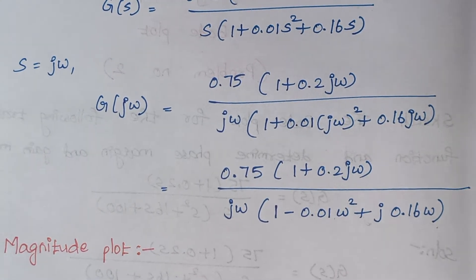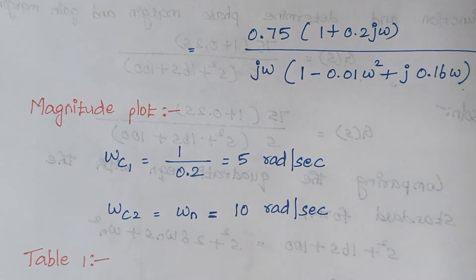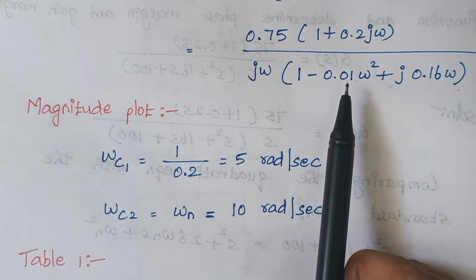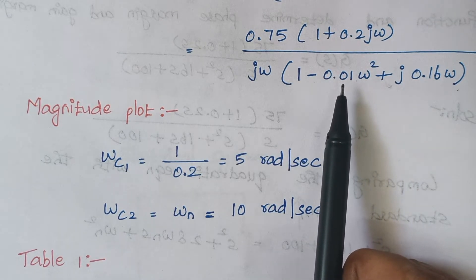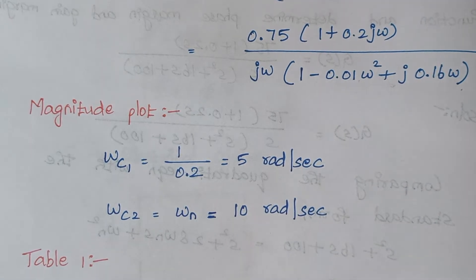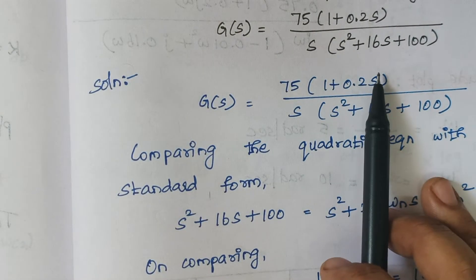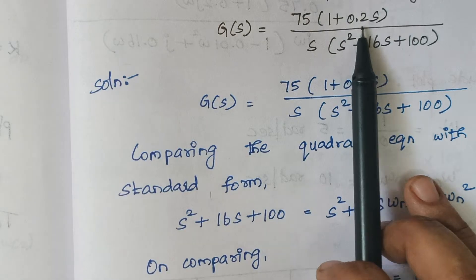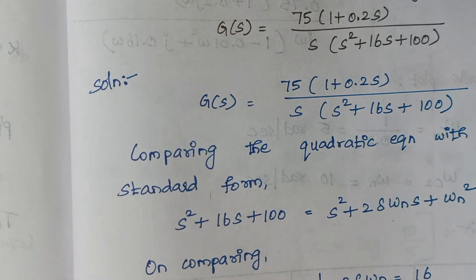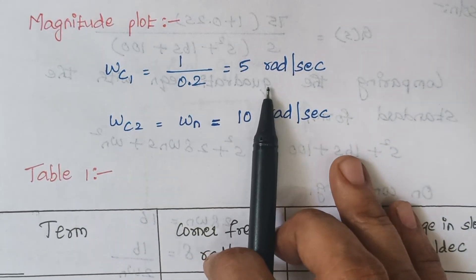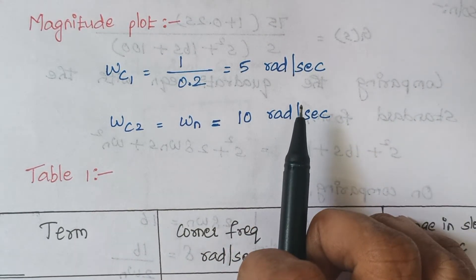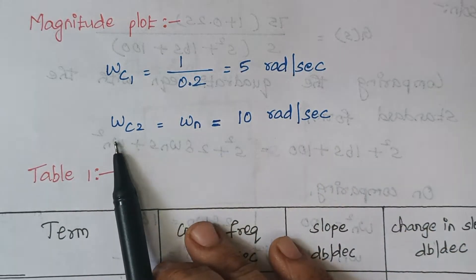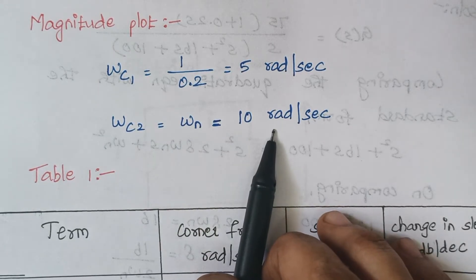The next step is to go for the magnitude plot. To find corner frequencies, we take the reciprocal of the coefficient of s. The coefficient of s is 0.2, so 1/0.2 = 5 radians per second, giving ωC1 = 5 rad/s. For the quadratic equation in the denominator, ωC2 = ωₙ = 10 radians per second.